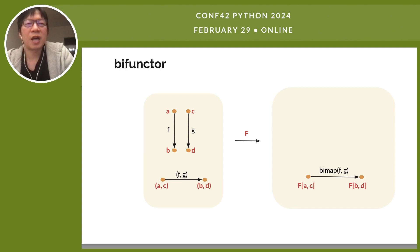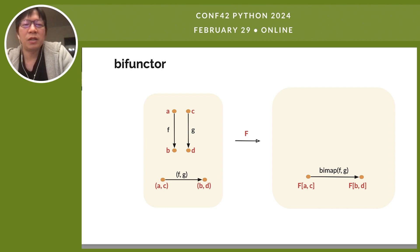In Python, if we have a type A and a type C, we can form the tuple type A comma C. Similarly, if we have a type B and a type D, we can form a tuple type B comma D. And if there is an arrow from A to B and another arrow from C to D, we can take those two arrows and form a tuple of arrows that goes from A comma C to B comma D. If we have a functor that maps A comma C to F of A comma C and B comma D to F of B comma D, and the functor also maps the tuple of arrows to a lifted tuple of arrows, then we call such a functor a bifunctor.